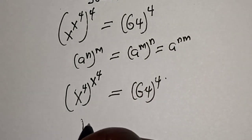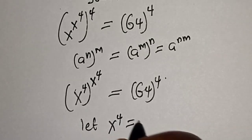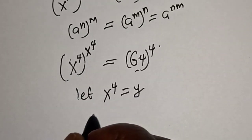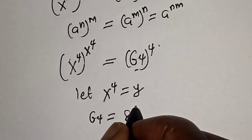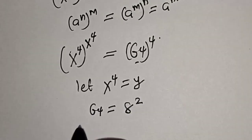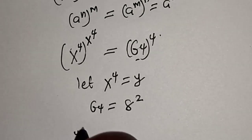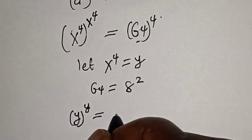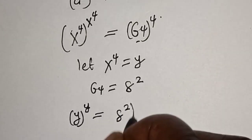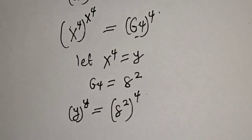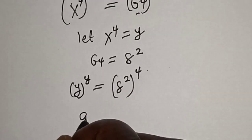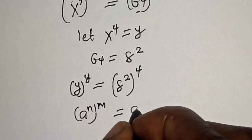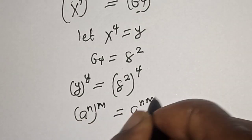From here, let s raised to power 4 be equal to y, and 64 be equal to h squared. So this becomes y raised to power y is equal to h squared raised to power 4. Remember the rule that a raised to power n raised to power m is equal to a raised to power n times m.